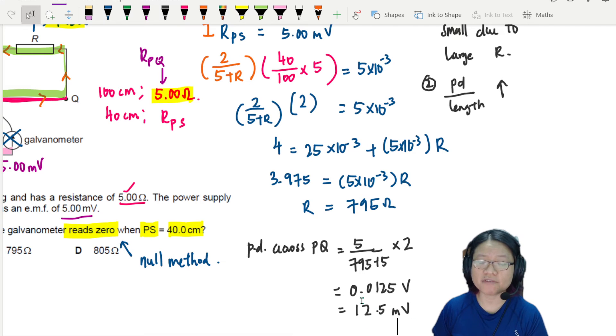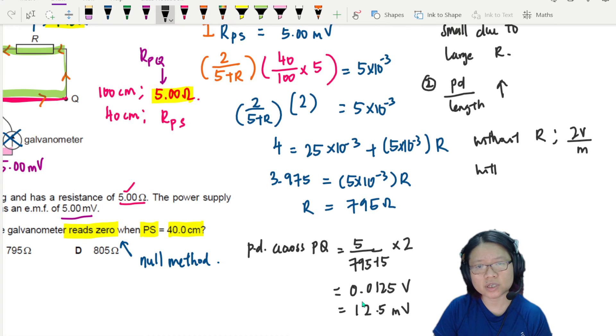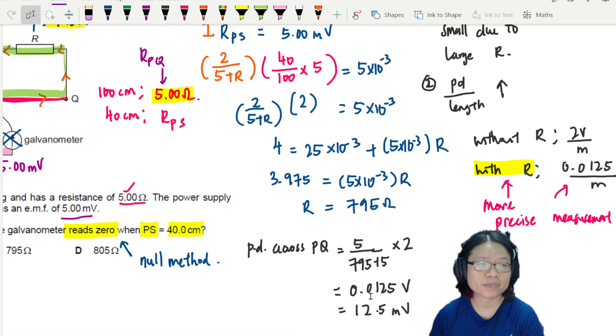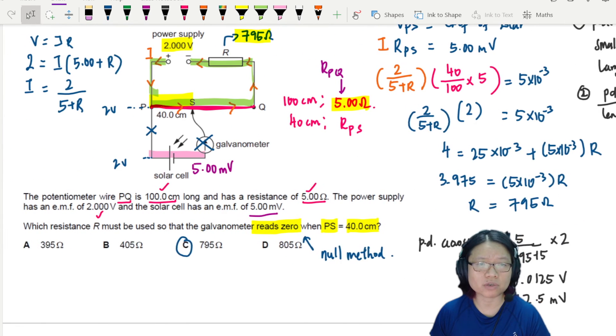From here, you can tell instead of having 2 volts per meter, previously it was 2 volts per meter without R. With R, it is now 0.0125 volts per meter, which means when I add this external resistor, I am adjusting the sensitivity. More sensitive, or basically in A-level words, it is more precise measurement.